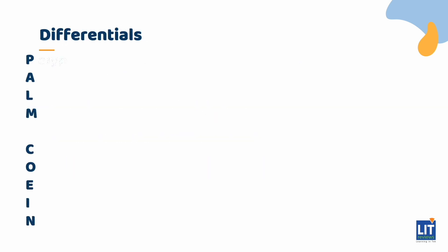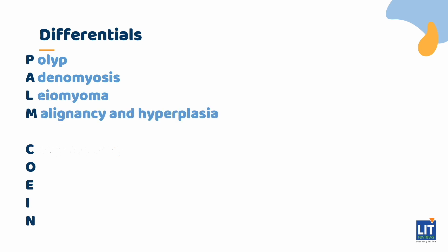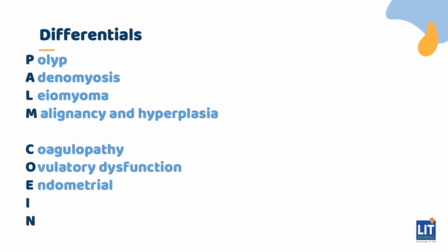As idiopathic AUB is a diagnosis of exclusion, differentials must be first considered. The International Federation of Gynecology and Obstetrics has developed a classification system for causes of AUB in non-gravid women, using the acronym PALM-COEIN. The nine categories are: polyps, adenomyosis, leiomyoma, malignancy and hyperplasia, coagulopathy, ovulatory dysfunction, endometrial, iatrogenic, and not yet classified.